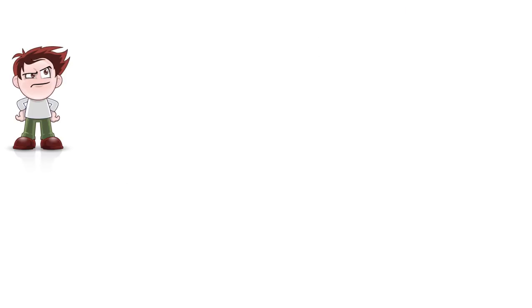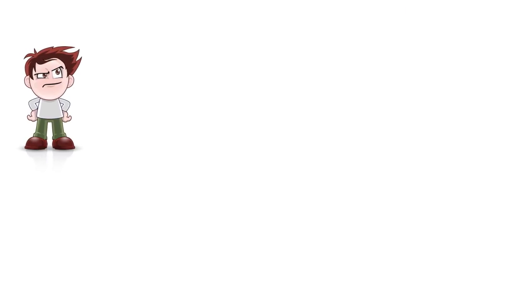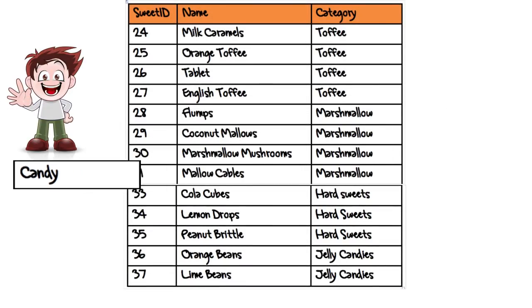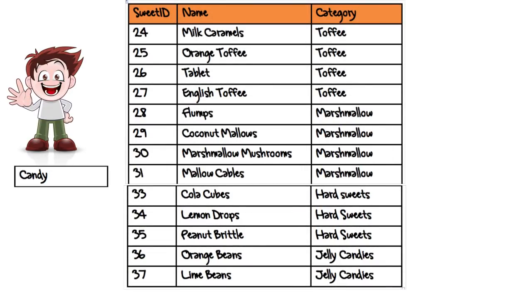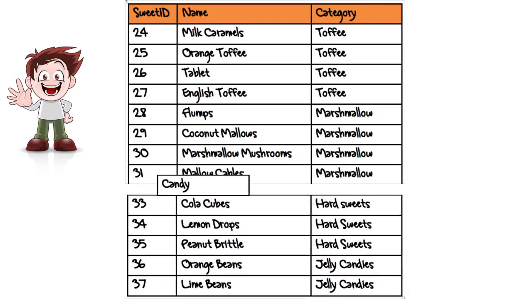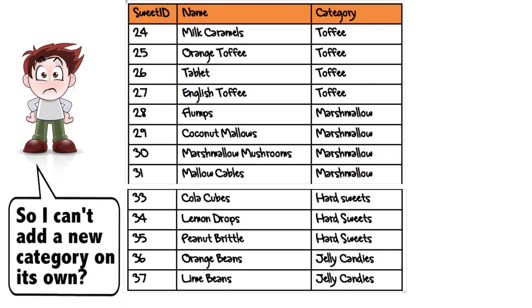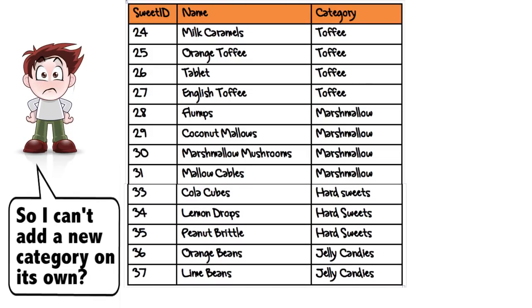And there's one last problem. Bob has decided to offer a new category of sweet — candy. He wants to add the candy category to his database, but because he hasn't made any candy yet, there's no sweet information to go into the database record. This means he can't add the new category until he has made a sweet in that category.